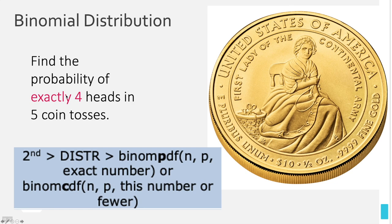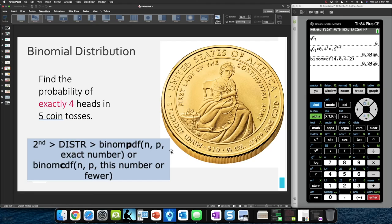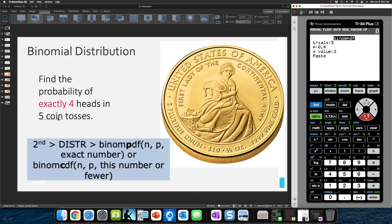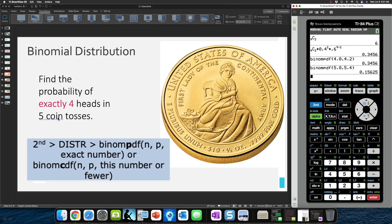This next example: find the probability of exactly four heads in five coin tosses. Since it says 'exactly four,' we use PDF. We go to second DISTR, select binomPDF. Our number of trials is five, our probability of success is one half (heads come up half the time), and our X is exactly four. Enter that and we get our answer. Easy.